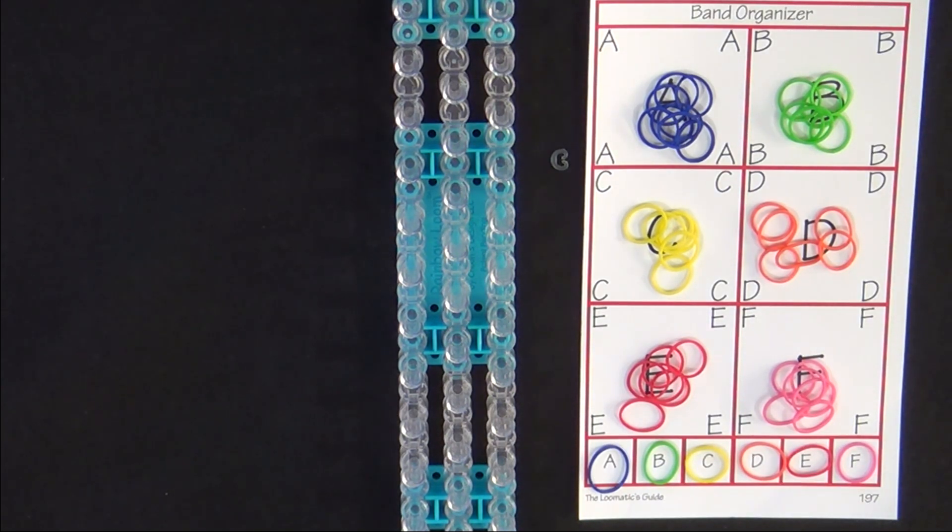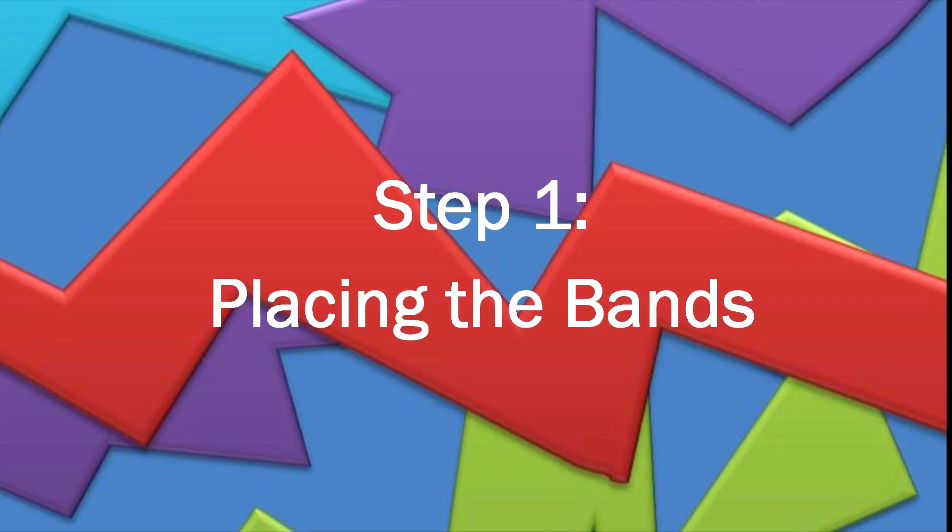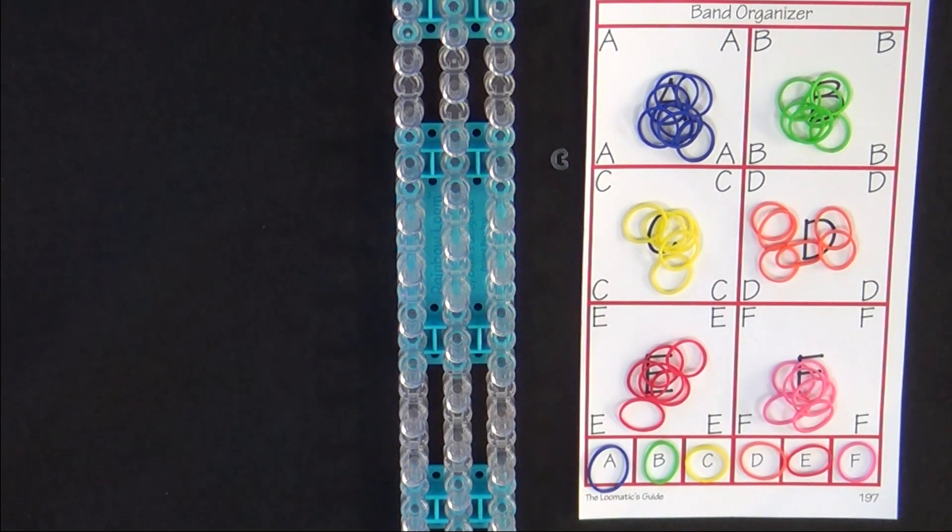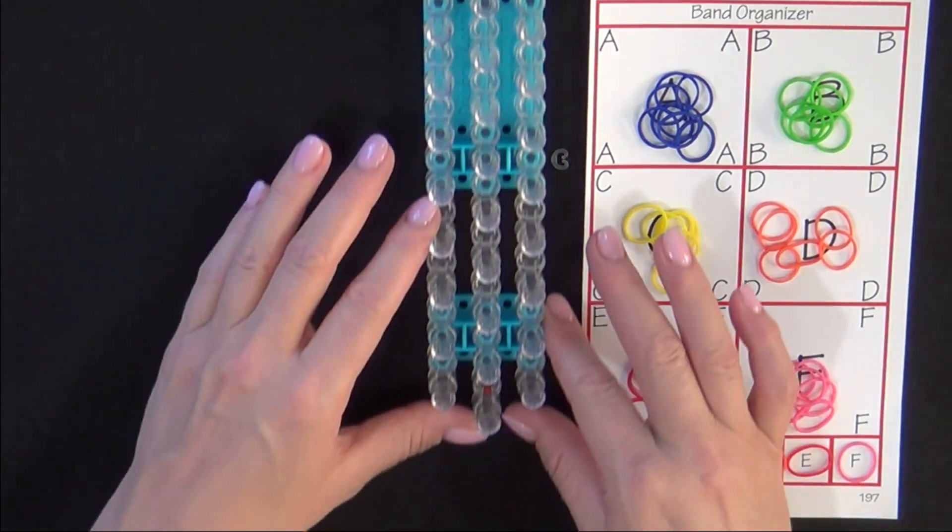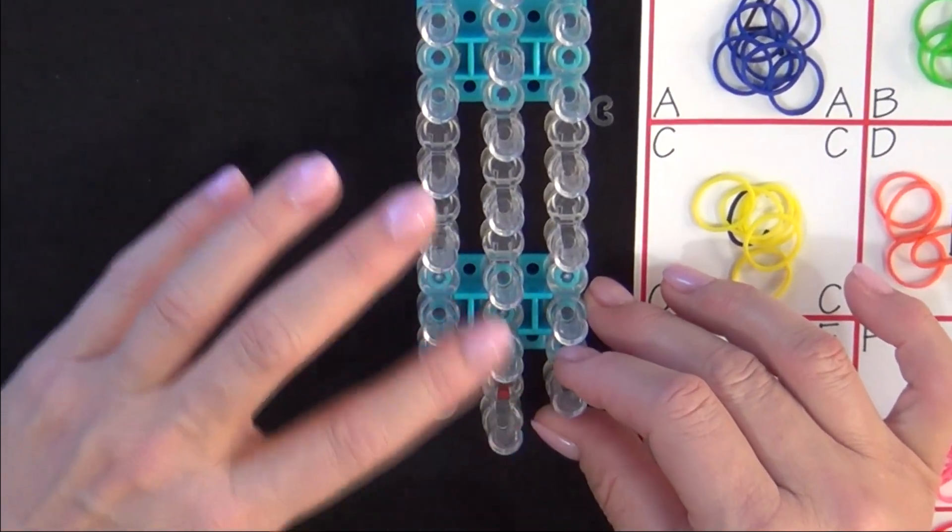All bands must be placed and looped in the correct order when making any design. Now let's get started. Turn your loom so that the red arrow is pointing away from you.